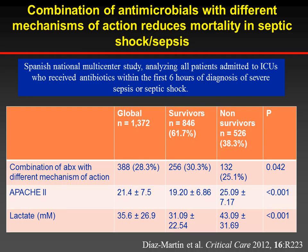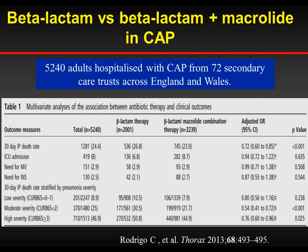Another interesting study published in Critical Care was a Spanish multinational multicenter study analyzing all ICU patients and examining treatment in the first six hours of diagnosis of septic shock and severe sepsis. They demonstrated that combination of antibiotics with different mechanisms of action provides a mortality advantage — non-survivors had higher Apache 2 scores and higher lactate. This study supports the use of drugs with different mechanisms — a backbone beta-lactam plus aminoglycoside, plus fluoroquinolone, or plus colistin.